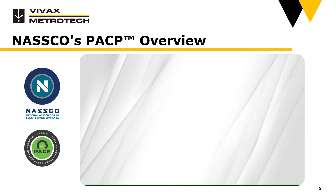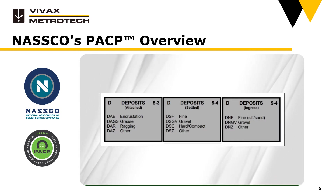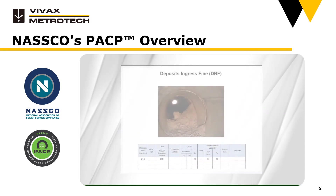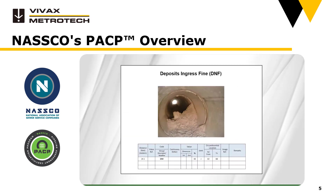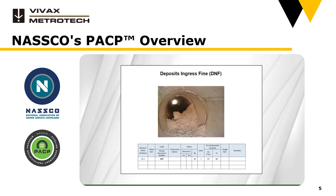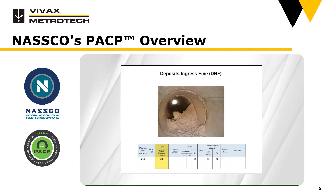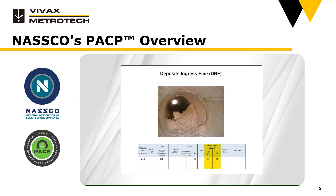The final example for this coding family is deposits, which are defined in three subgroups: attached, settled, or ingress. In this particular case, material such as sand or silt has been washed into the pipe from the surrounding ground. It is coded as DNF — deposits, ingress, fine — and it's impeding the flow by roughly 40% at the joint from 2 to 8.